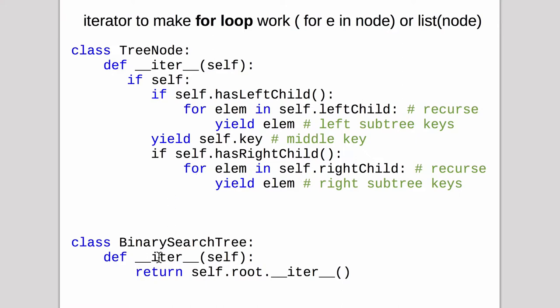So a binary search tree has an iterator. And the iterator can be called from a for loop or inside of a list. So if you call list on the tree or if you say for some variable in a node or the tree, it's going to iterate through everything. And return it in order from smallest to largest.